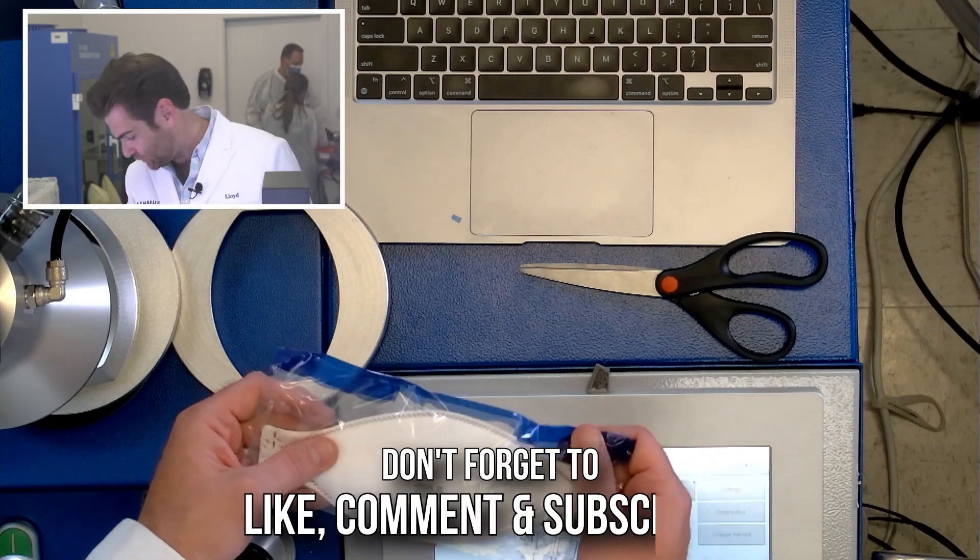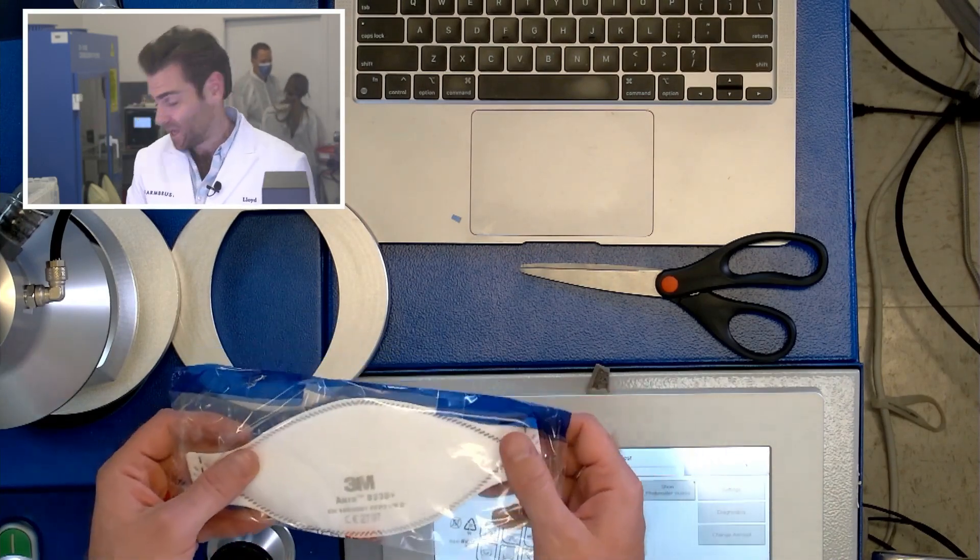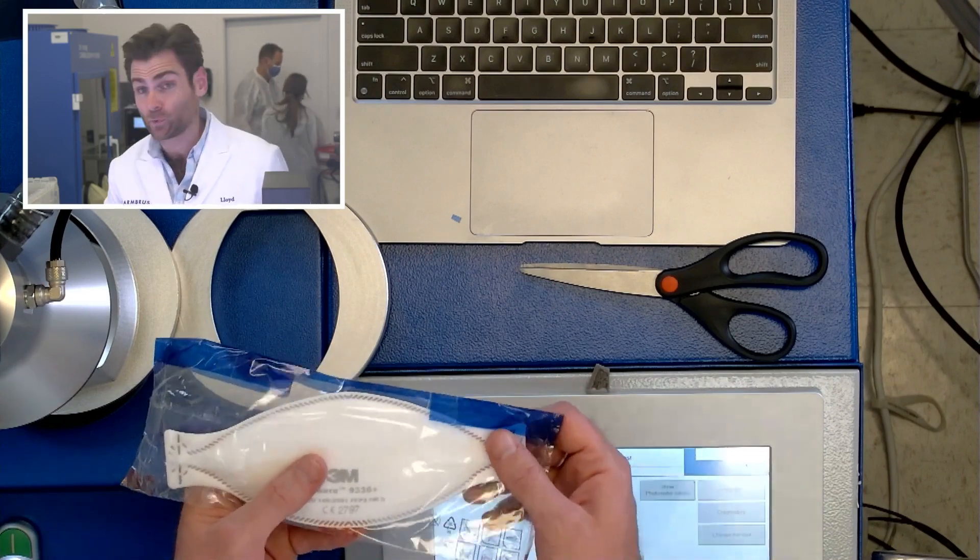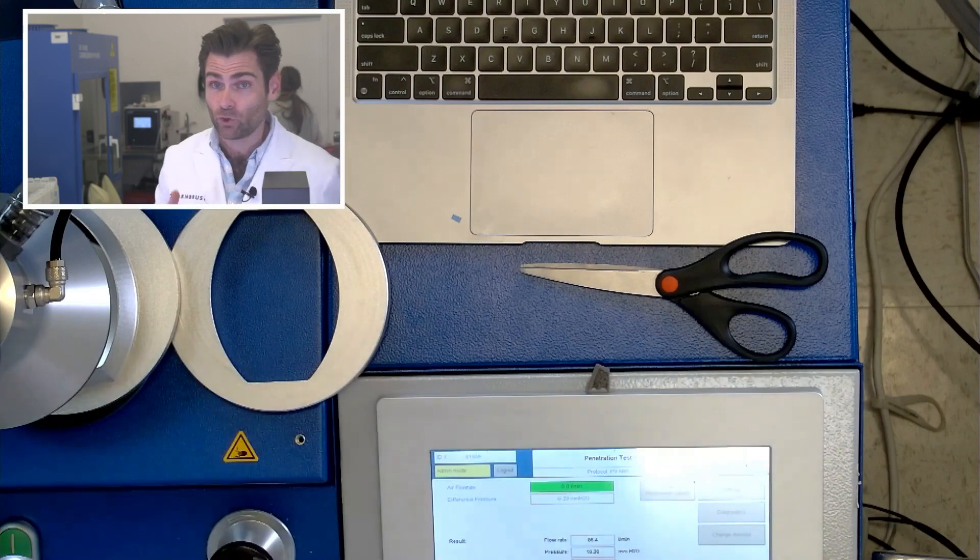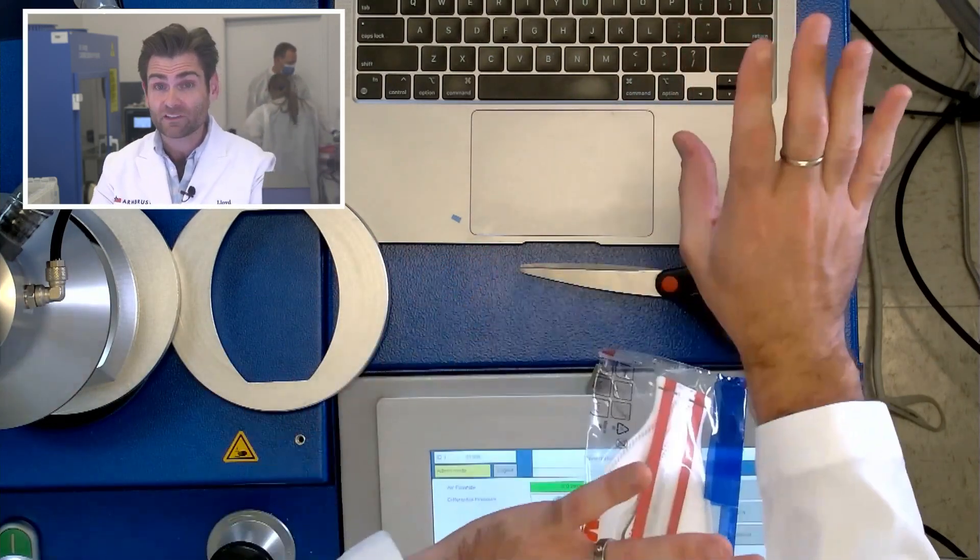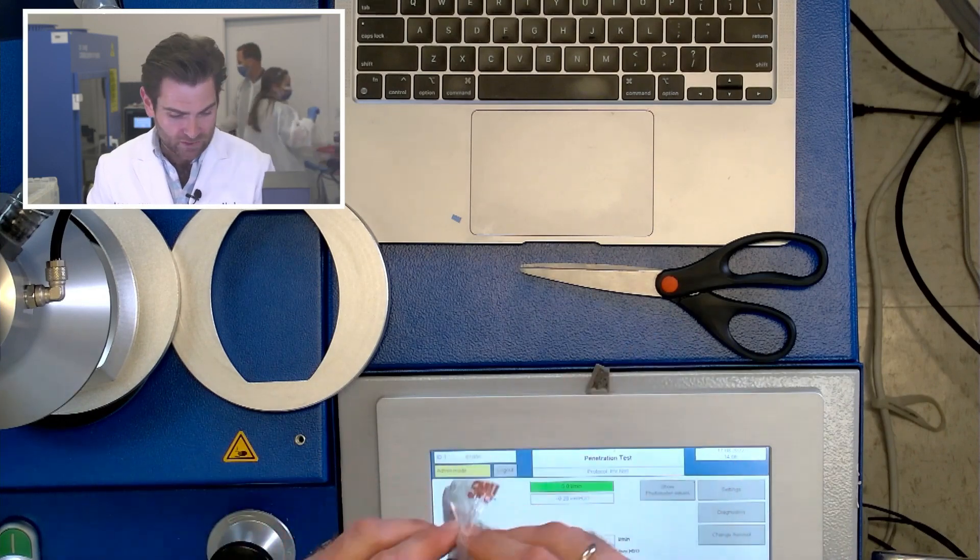Alright, so this is the Aura 9330. This is the FFP3 versus the FFP2. The FFP2 is a lower standard. I don't know the difference—if someone does, please explain it to me—but this is somehow the next level. I don't know how you get better than what we just tested.